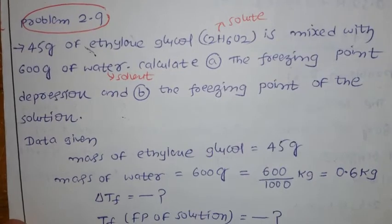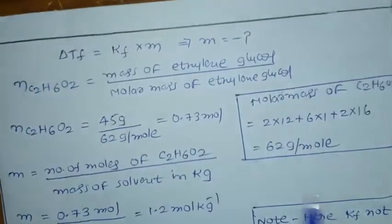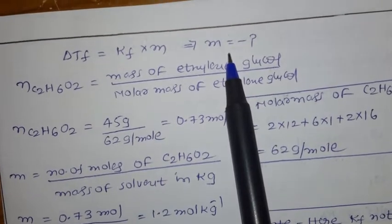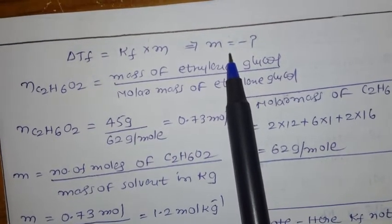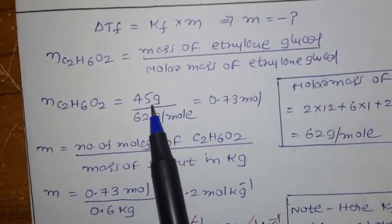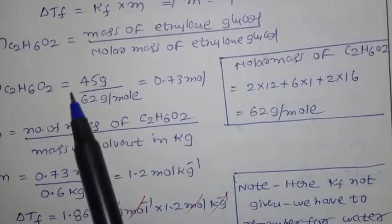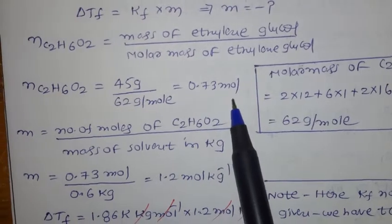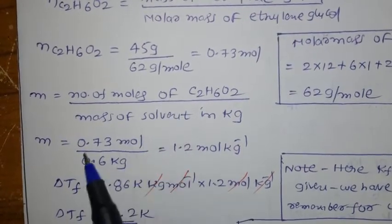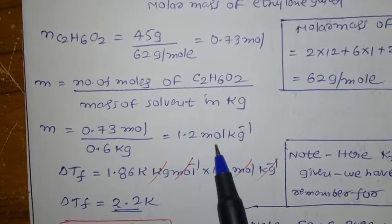We use ΔTf = Kf × molality. Number of moles of ethylene glycol = mass / molar mass = 45 / 62 = 0.73 moles. Molar mass of ethylene glycol (C2H6O2) = 62 g/mol. Molality = 0.73 mol / 0.6 kg = 1.2 mol per kg.